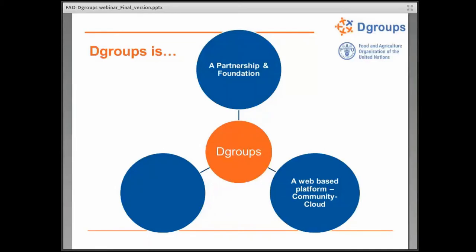Apart from the partnership, and what you're probably most familiar with, is the platform that powers dGroups. It's a web-based platform hosted and maintained by WA Research in Switzerland. It's recently being referred to as the community cloud. So you might hear different terms – the dGroups platform, the WA Research platform, the community cloud platform – but there's one platform powering all of these groups and all of this communication happening through them.